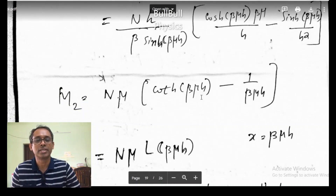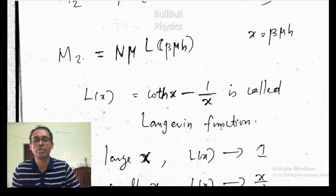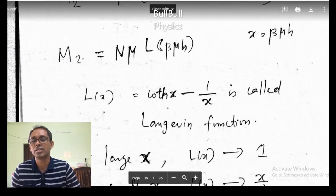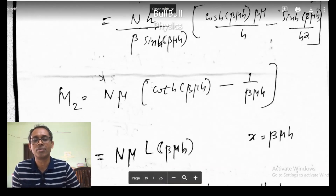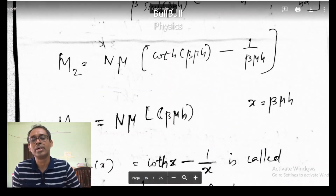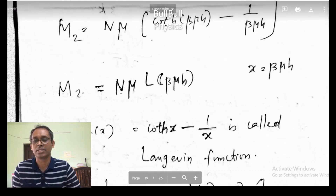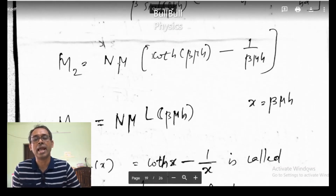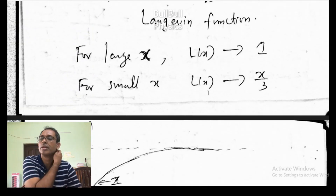If I take x = beta mu H, this will be in the form of the Langevin function. The Langevin function is L(x) = coth(x) - 1/x. So it is of this form. This is actually the Langevin function if I take x as beta mu H. So the average magnetization in the z-direction is written as M_z = N mu * L(beta mu H), where L is the Langevin function.